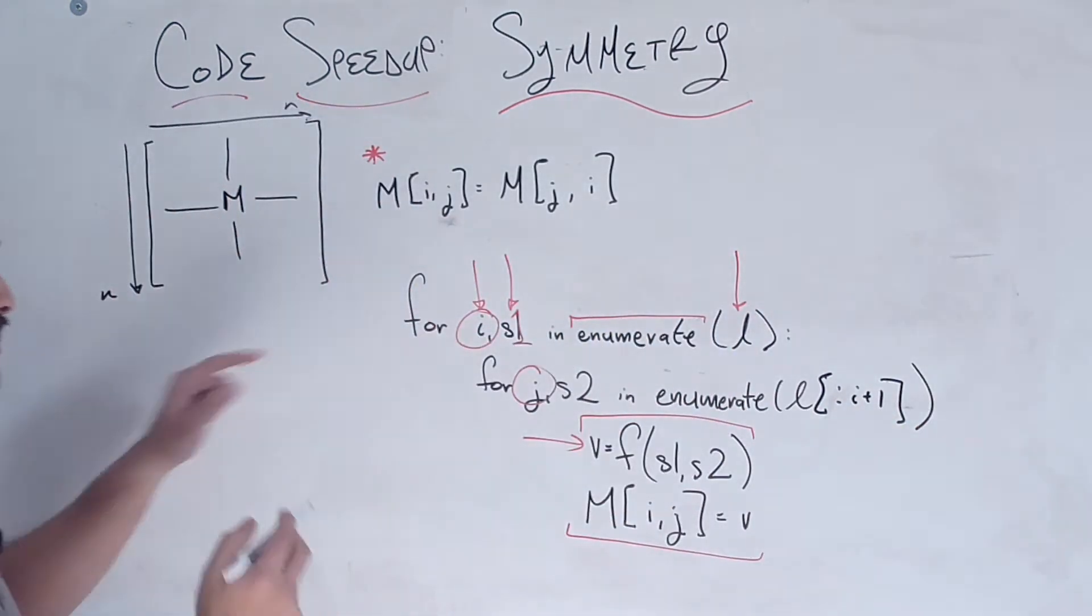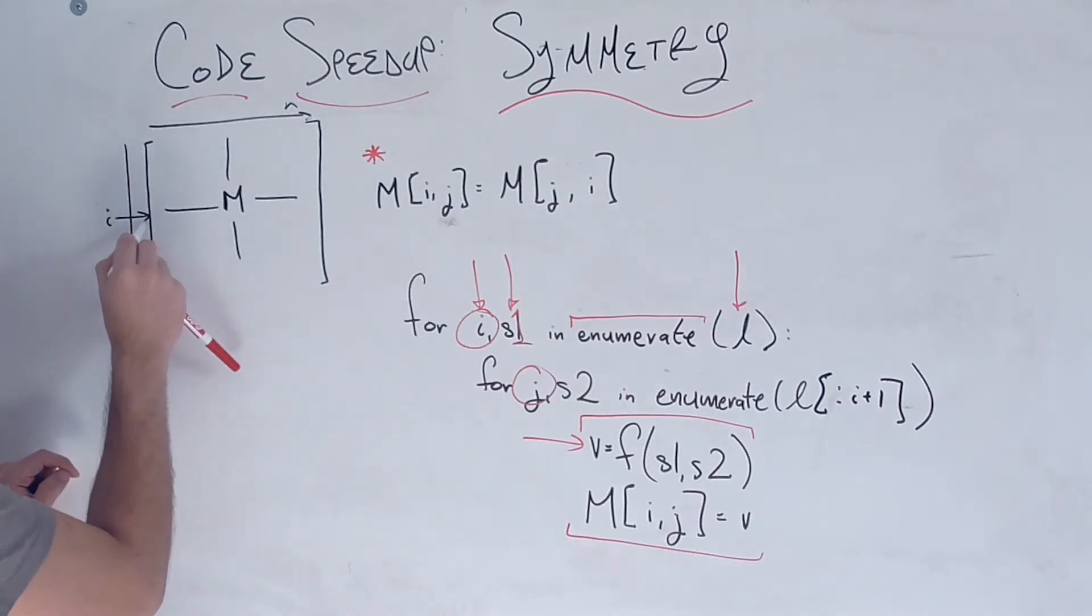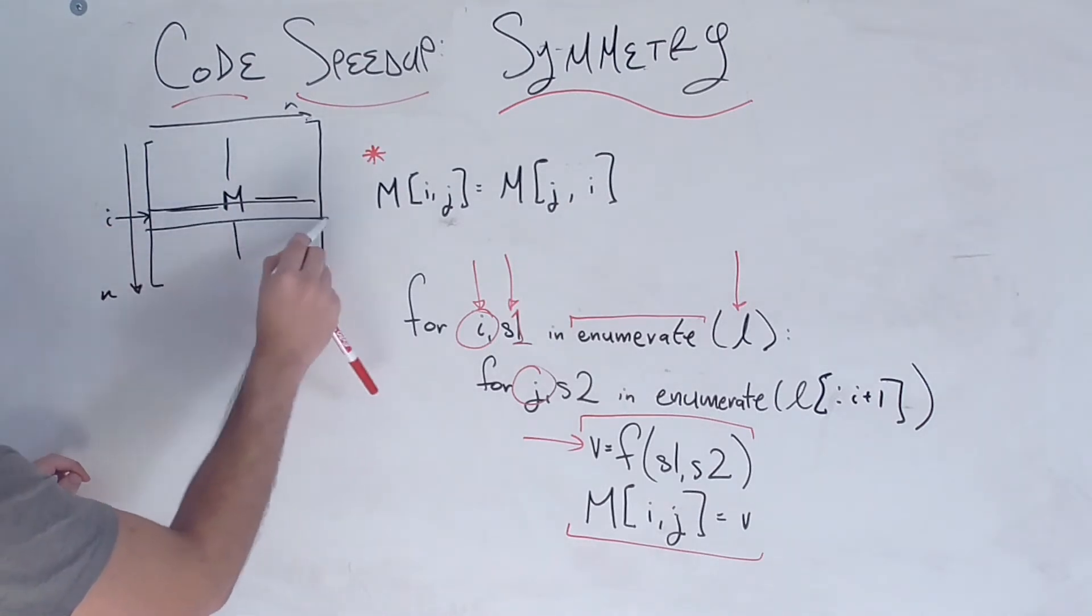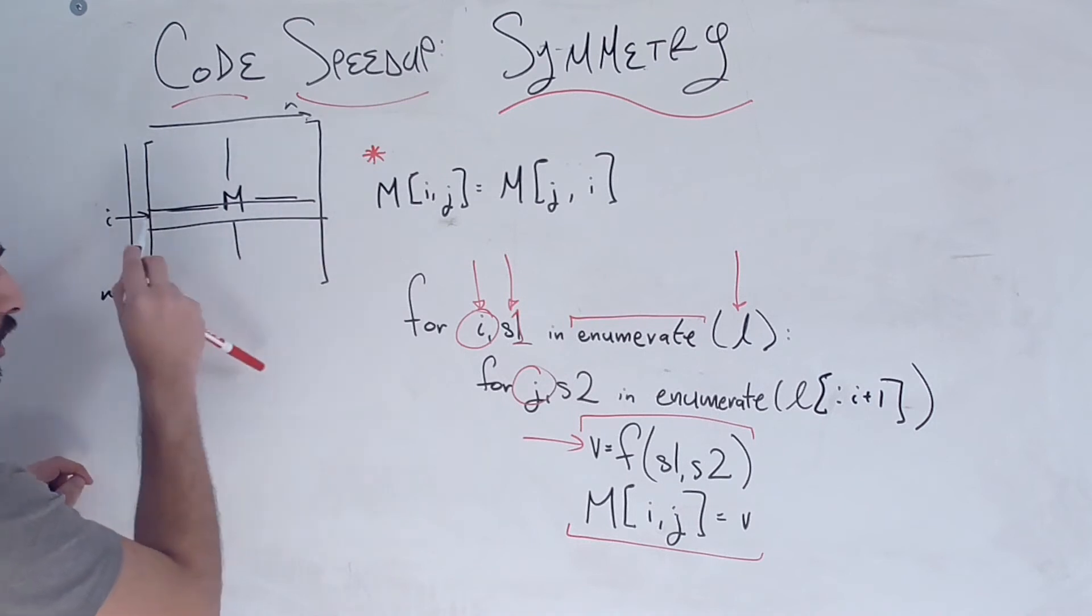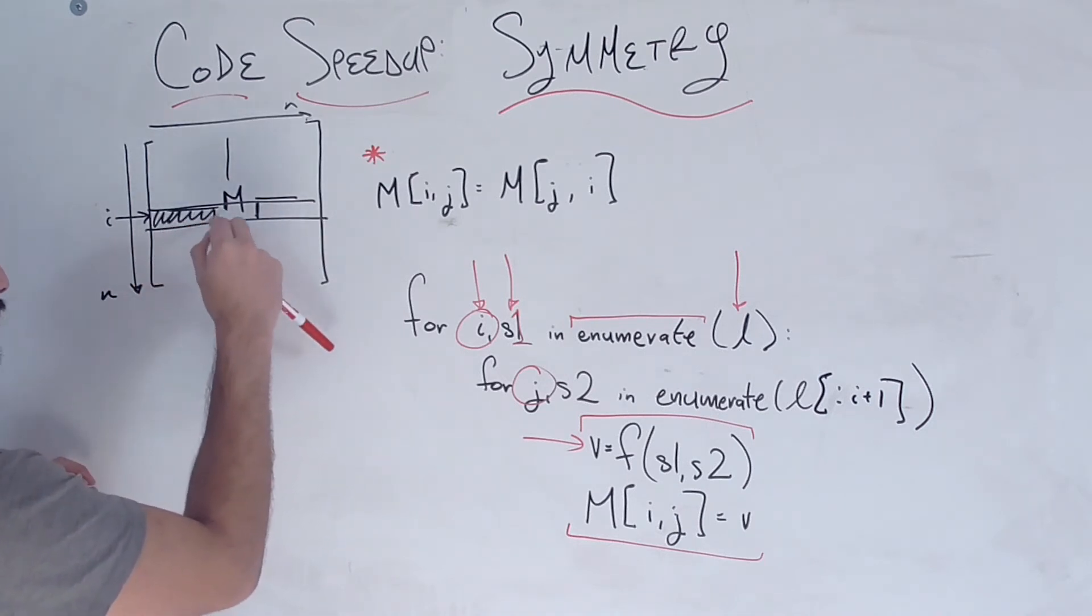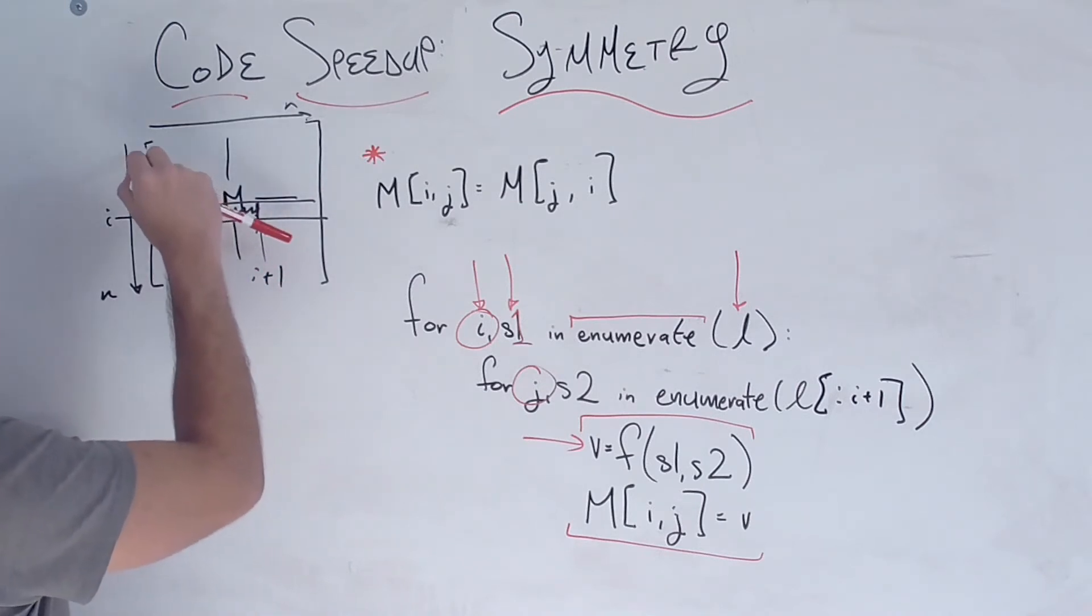And what does that mean? Well, let's say I'm at some student i. So let's say I'm at student i. We're only going to look at all students j, so all indices j, that are going up until the i plus first element. So let's say this is index i plus 1. And we're doing that every single time.